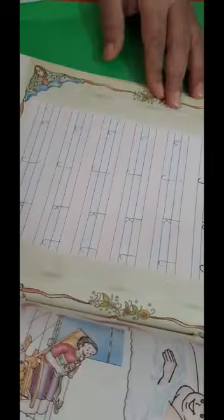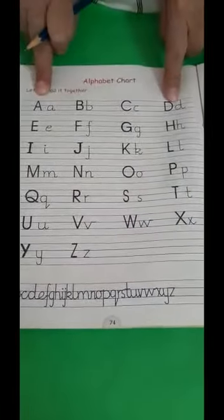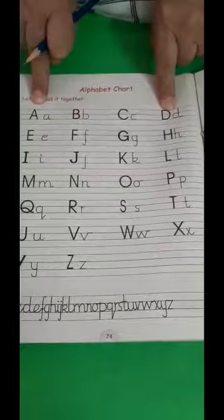Now children, complete this page in this book. And I see, this is page number 74 of this Integrated Activity Book. And if you want to see the formation of the letters, kindly see page number 74 for the formation.